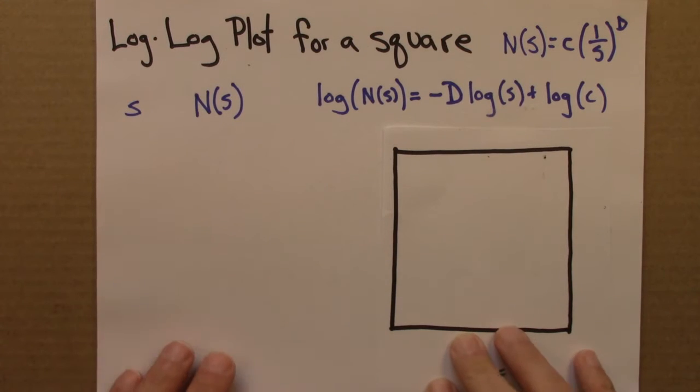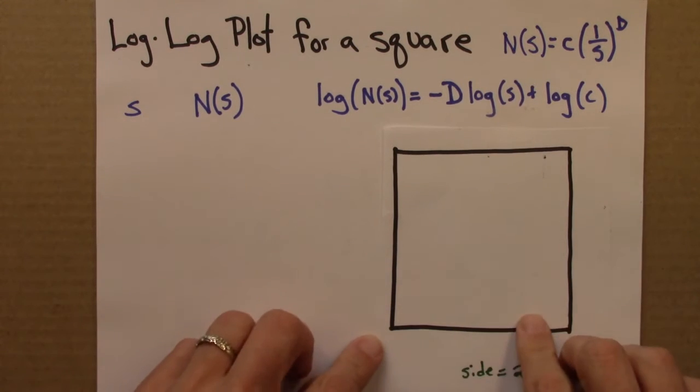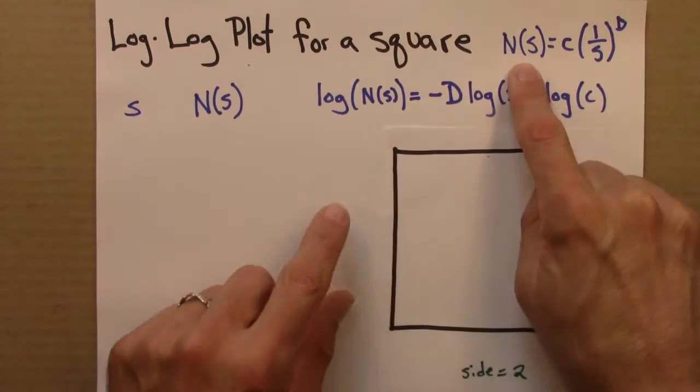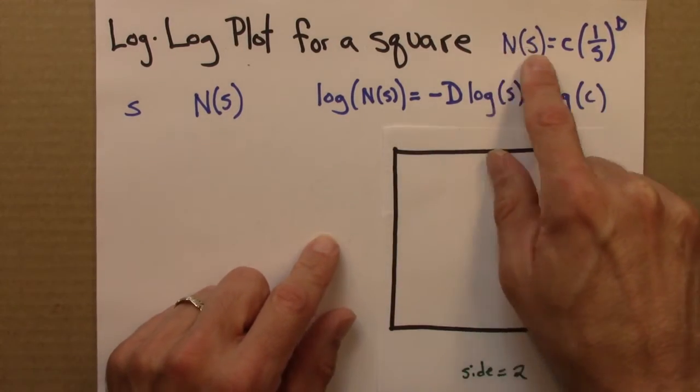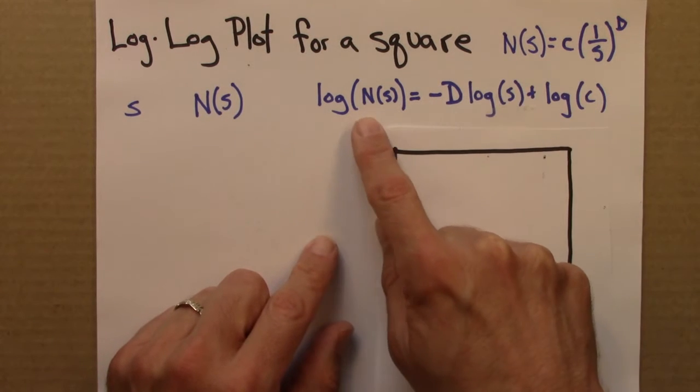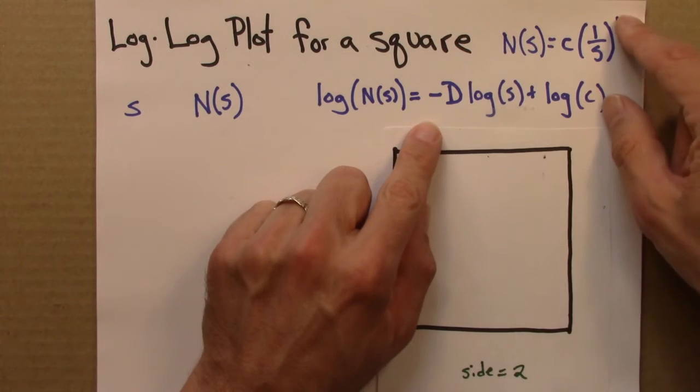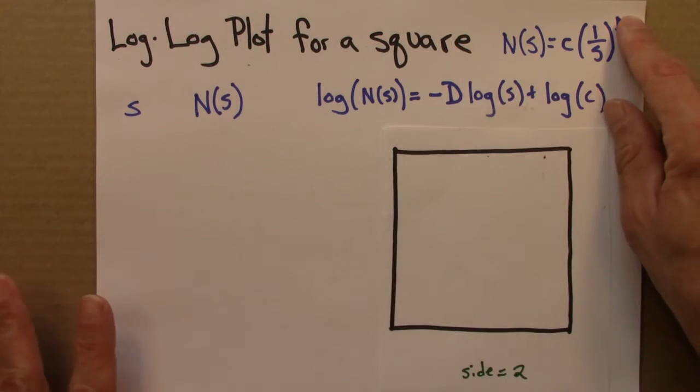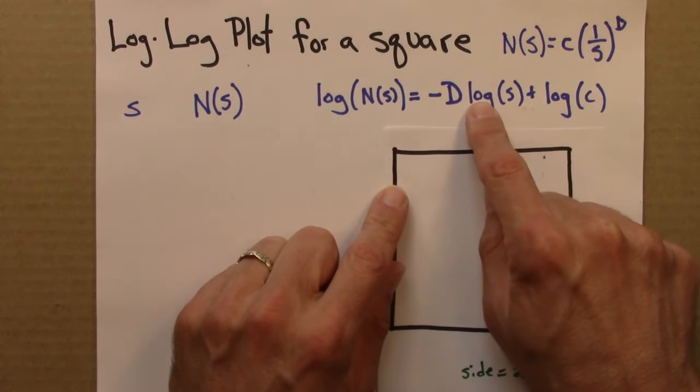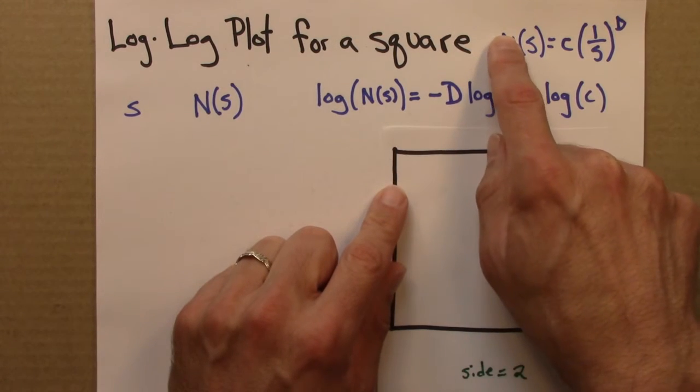So let's do an example of a log-log plot for a square. Remember where this all comes from. This is our basic relationship. By taking a log of both sides and doing a little bit of algebra, I came up with this. So these two blue equations are exactly the same, they're just written in different ways. This is what happens if you take the logarithm of that and simplify a little bit.